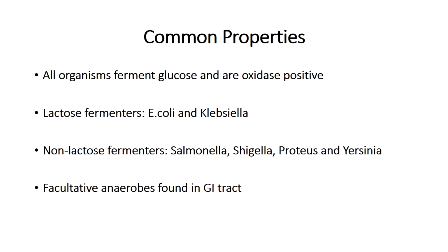The two groups depend on whether or not they ferment lactose. The lactose-fermenting Enterobacteriaceae include E. coli and Klebsiella. The non-lactose fermenting bacteria include Salmonella and Shigella. Furthermore, all of these bacteria tend to survive well in the gastrointestinal tract, which is why they commonly cause diarrhea when there is overgrowth or invasion. One can conclude that these bacteria work well in low-oxygen or oxygen-free environments — they are referred to as facultative anaerobes.